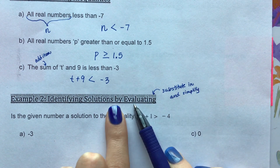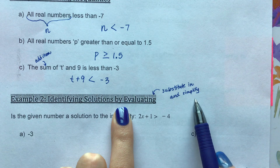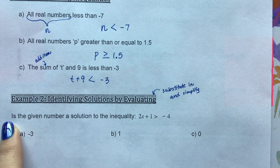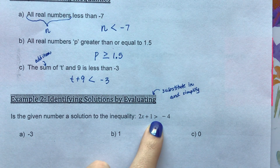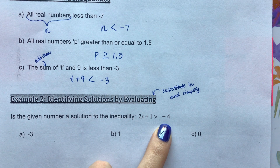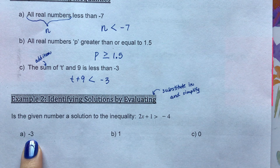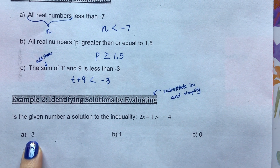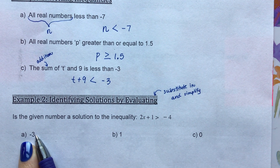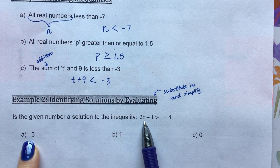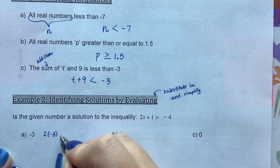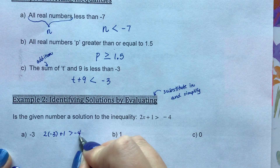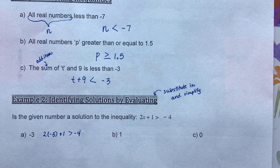When we see the word evaluate, it just means substitute in a value and then simplify your answer. The question asks: is the given number a solution to the inequality 2x plus 1 is greater than negative 4? We're trying to figure out if negative 3 is a solution. We take negative 3 and substitute it in for x, giving us: 2 times negative 3 plus 1 is greater than negative 4.